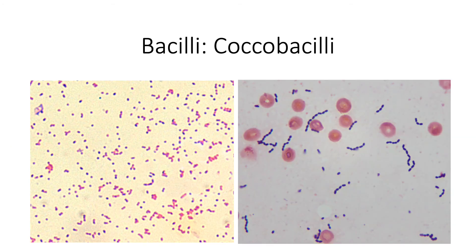Let's take a closer look at your coccobacilli. As you can see, they are very short bacilli, or very short rods. And sometimes it's hard to distinguish them from your cocci, especially your lancet diplococci. However, you should note that as you progress with our course, you will be able to familiarize yourselves with the different ways to identify or differentiate your coccobacilli from your cocci.